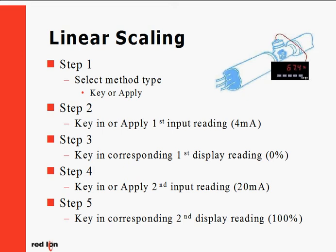The first step is to select the proper scaling method: Keyin or Applied. The next step is to Keyin or apply the low input signal. In our example, that would be 4 milliamps. Next, in step 3, we keyin our corresponding display reading for the low point, or in our example, 0 percent. Now the first half of the scaling is complete — the low point, or minimum.